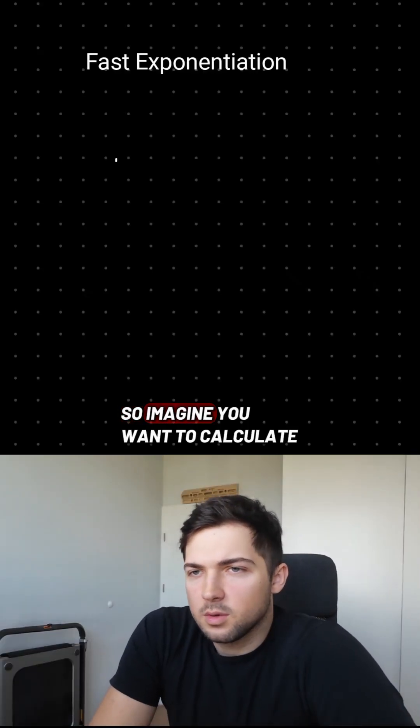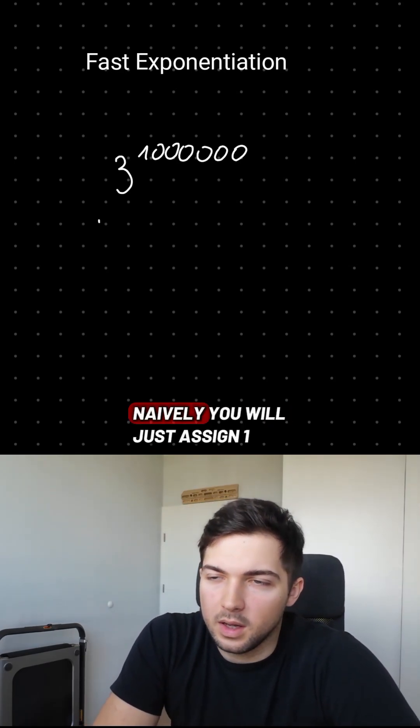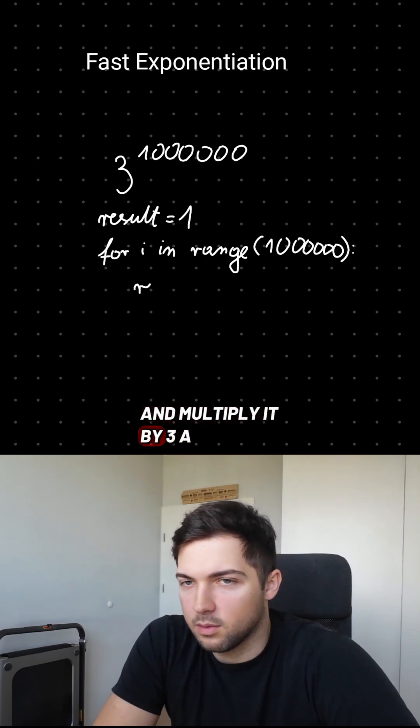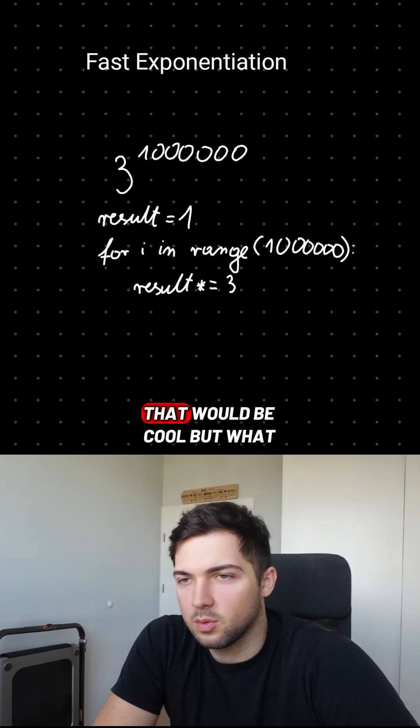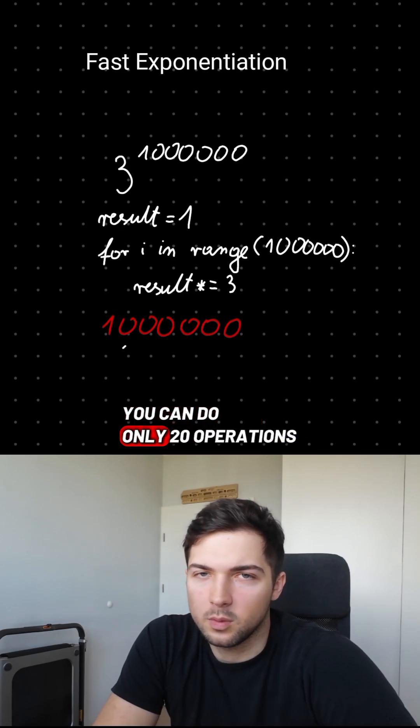So imagine you want to calculate, for some unknown reason, 3 to the power of 1 million. Naively, you will just assign 1 to some result variable and multiply it by 3 a million times. That would be cool, but what if I told you that instead of 1 million you can do only 20 operations?